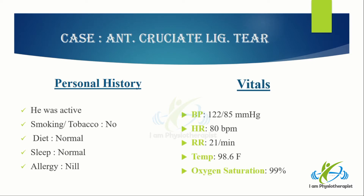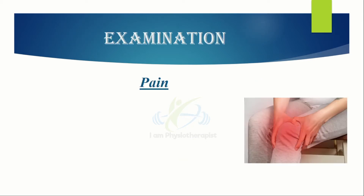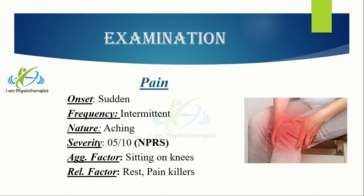His vitals — temperature, blood pressure, respiratory rate, and pulse rate — were in normal range. The review of systems showed no involvement of any systemic issue with this pain. There was deep aching intermittent pain at the anterior aspect of the knee. Onset of pain was sudden, and the severity of pain was 5 out of 10 according to the Numeric Pain Rating Scale.